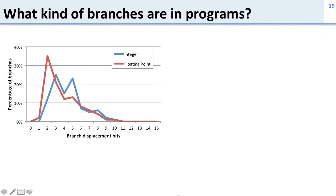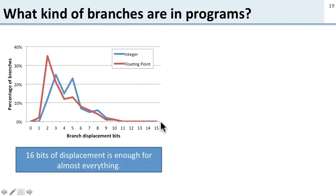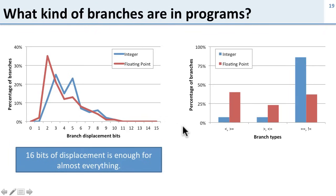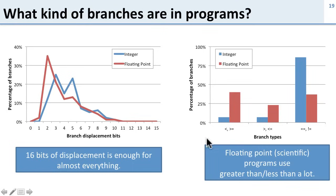Now let's look at what kinds of branches appear in programs and why MIPS made these design trade-offs. Data shows that for integer programs (like web browsers) and floating-point programs (like image processing), the vast majority of branches need only 1 to 5 bits of displacement, and very few need more than 11 bits. So MIPS's choice of 16 bits of displacement is sufficient for almost everything. Additionally, for integer code — the most common case — equals and not-equals are by far the most frequent branch types, which is why MIPS provides branch equal and branch not equal instructions.